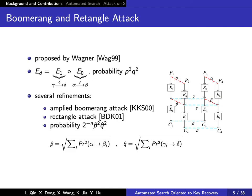Boomerang attack is a statistical cryptanalysis technique proposed by Wagner in 1999. The boomerang distinguisher is constructed by splitting the cipher function into two parts E0 and E1. Then two short differentials are combined into a longer boomerang. The probability of the boomerang distinguisher is p^2 * q^2. The boomerang attack is a chosen-plaintext, chosen-ciphertext attack.